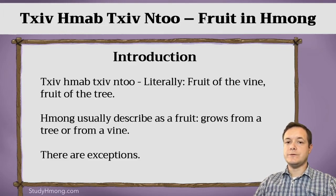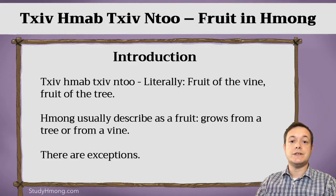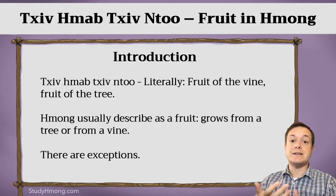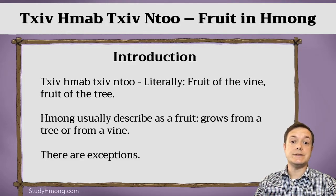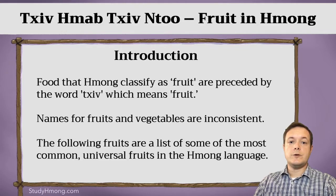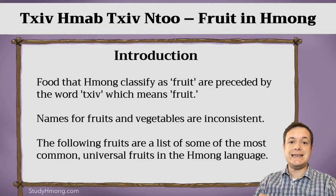One term often used to refer to fruit is 自, 自动. This is an appropriate colloquialism because it describes anything that Hmong in general refer to or think of as a fruit — something that comes from either a tree or from a vine. However, there are exceptions to this rule. For example, peanut doesn't grow on a tree, but they refer to it as 自. Generally speaking, any food that Hmong refer to or think of as a fruit will be preceded by the word 自, which means fruit.